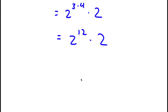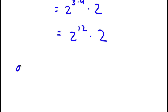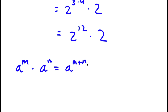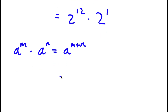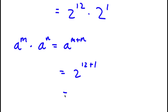If I have something in the form a to the power of m times a to the power of n, this is equal to a to the power of m plus n. So 2 is the same thing as 2 to the power of 1. So I have 2 to the power of 12 times 2 to the power of 1, which equals 2 to the power of 12 plus 1, which is equal to 2 to the power of 13. So this is my answer.